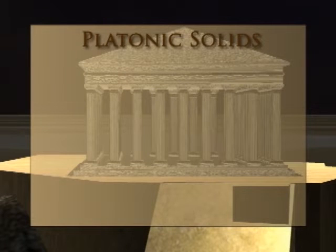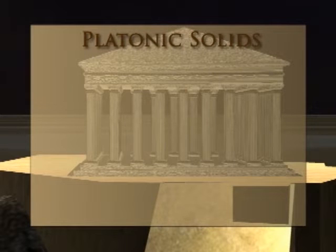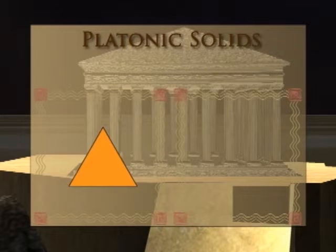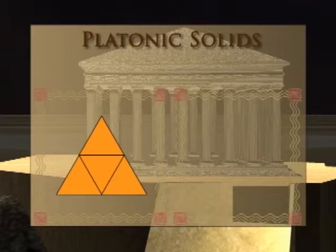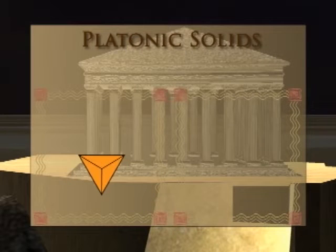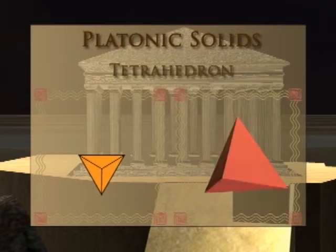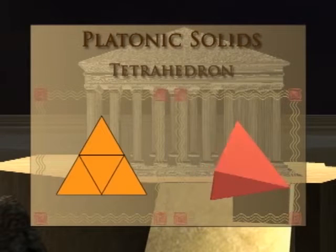Let's start with their two-dimensional counterparts and build their three-dimensional version. Look at this equilateral triangle. It is a regular polygon, where all sides and angle measures are congruent. This two-dimensional net, when folded this way, becomes the three-dimensional solid called a tetrahedron, which is one of the Platonic Solids.